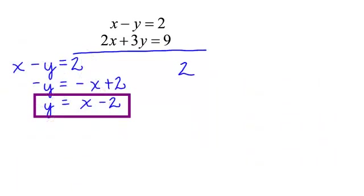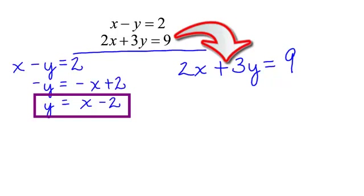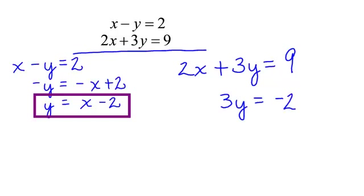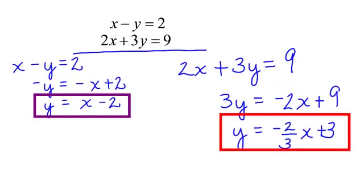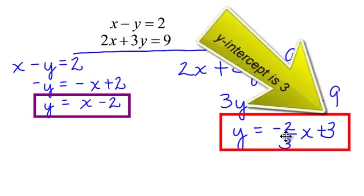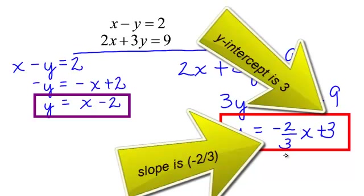Let's solve the second equation for y. I will have 2x plus 3y equals 9. Subtract 2x from both sides. I am skipping a few steps here because I am assuming that you are good at solving equations if you are at this point in algebra. Divide everything by 3, so y will equal negative 2 thirds x plus 9 over 3. That will be 3. So I have my two equations. In this equation, the y-intercept is 3 and it has a negative slope, negative 2 over 3.